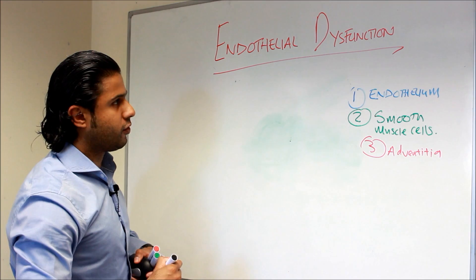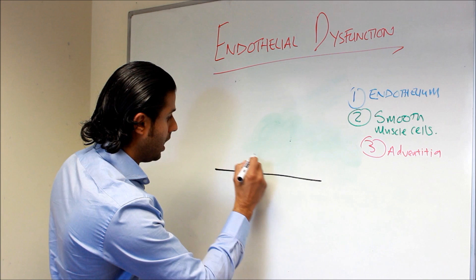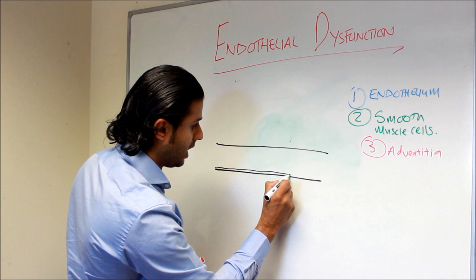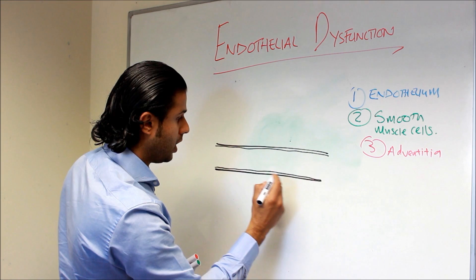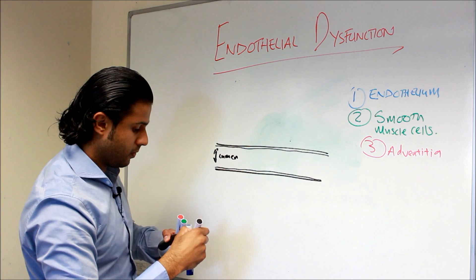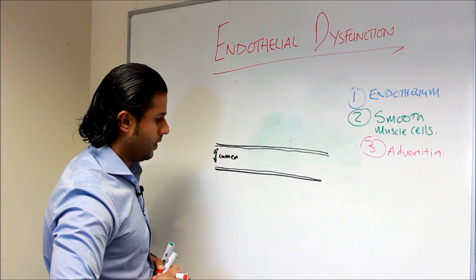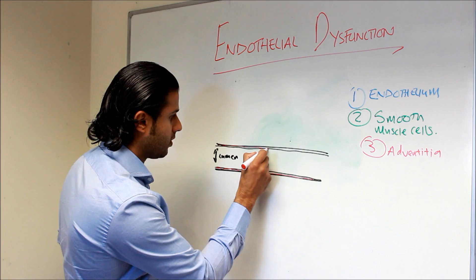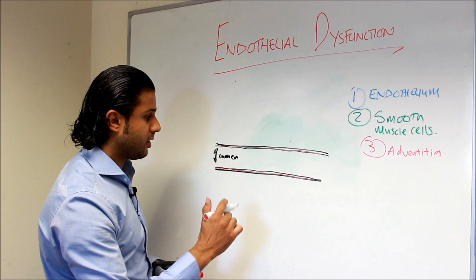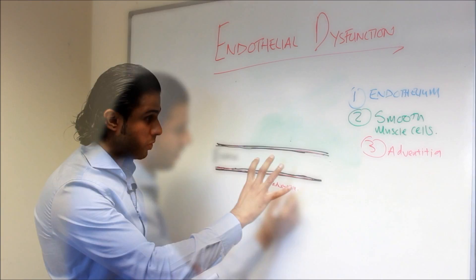If you imagine a longitudinal image of your blood vessel, we've got the endothelium as the inner layer. These are the two walls of your arteries, and this is the lumen of the vessel. You've got the smooth muscle just here — a layer of actin and myosin filaments which allow the blood vessel to dilate or constrict — and then the adventitia on the outside. Once we have this longitudinal view, we can look at exactly what endothelial dysfunction is.